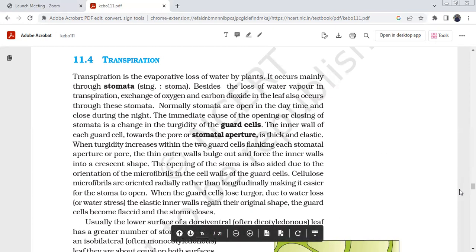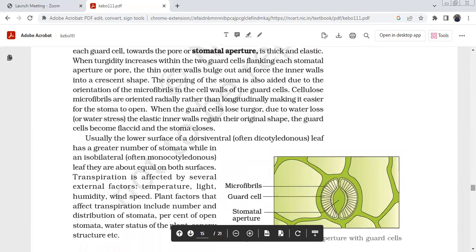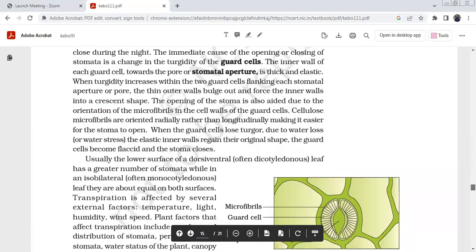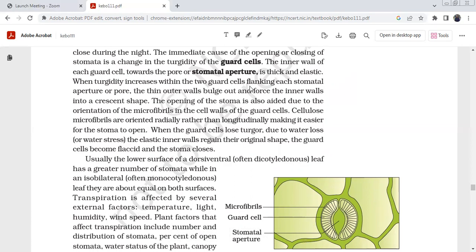The inner wall of each guard cell is very clear. The inner wall of each guard cell towards the pore or stomatal aperture is thick and elastic. When turgidity increases within the two guard cells flanking each stomatal pore,